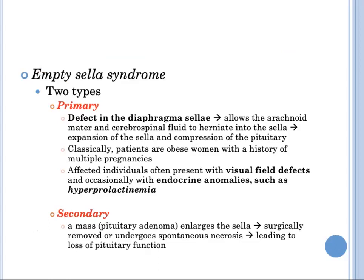There are two types of empty sella syndrome. In primary empty sella, a defect in the diaphragma sellae allows the arachnoid mater and cerebrospinal fluid to herniate into the sella, expanding it and compressing the pituitary. This classically occurs in obese women with a history of multiple pregnancies; affected individuals often present with visual field defects and occasionally hyperprolactinemia due to interruption of inhibitory hypothalamic inputs. In secondary empty sella, a mass such as a pituitary adenoma enlarges the sella and is then either surgically removed or undergoes infarction, leading to loss of pituitary function.